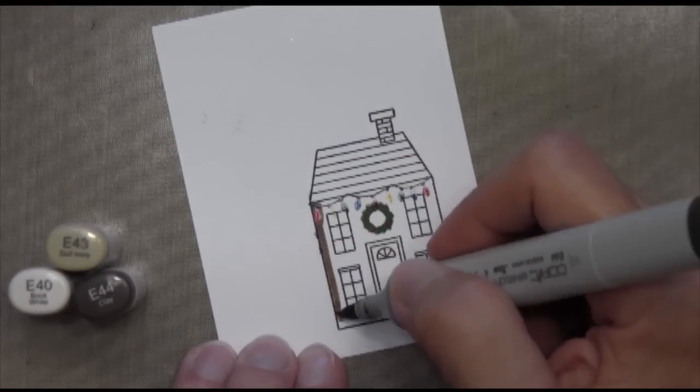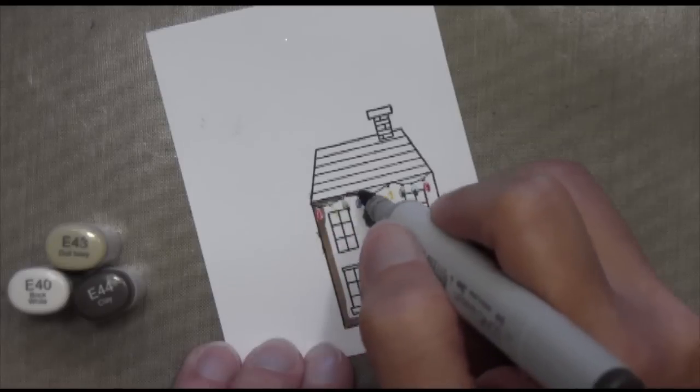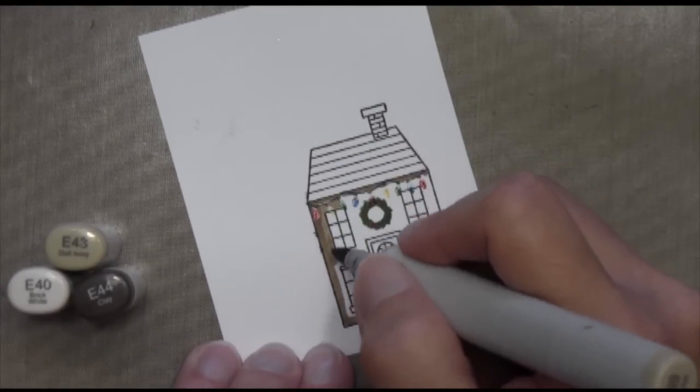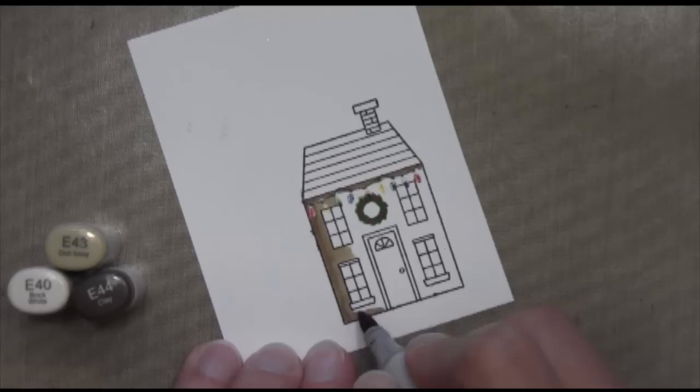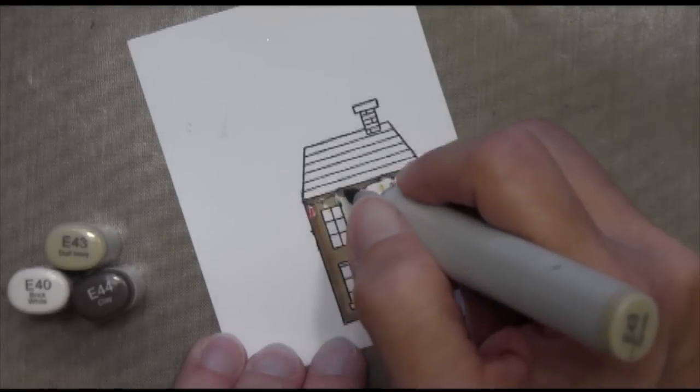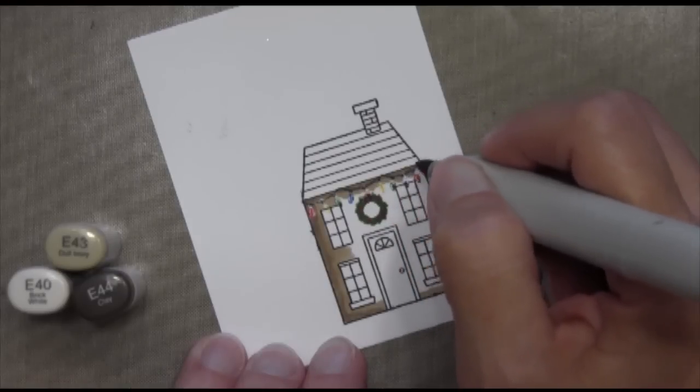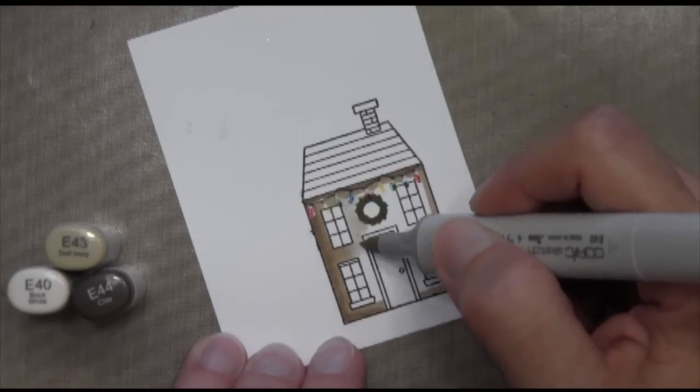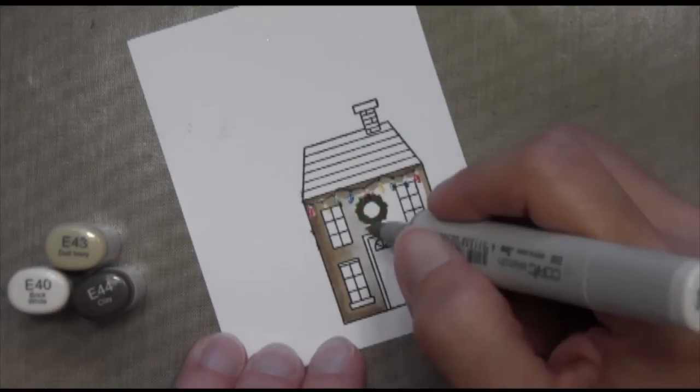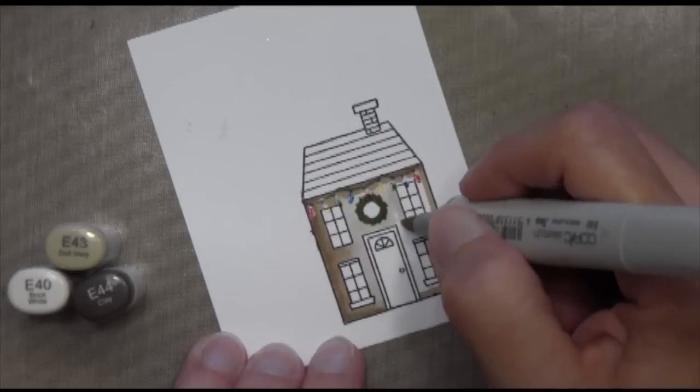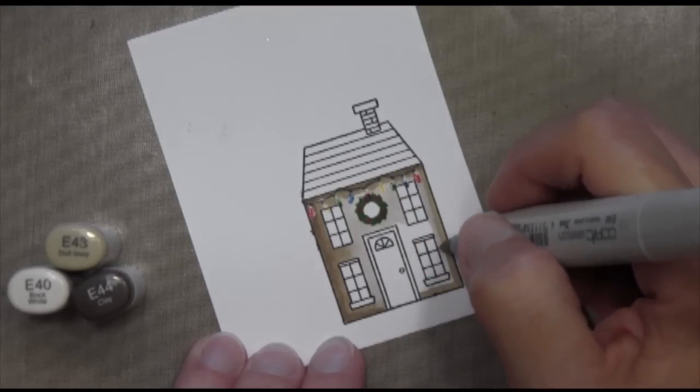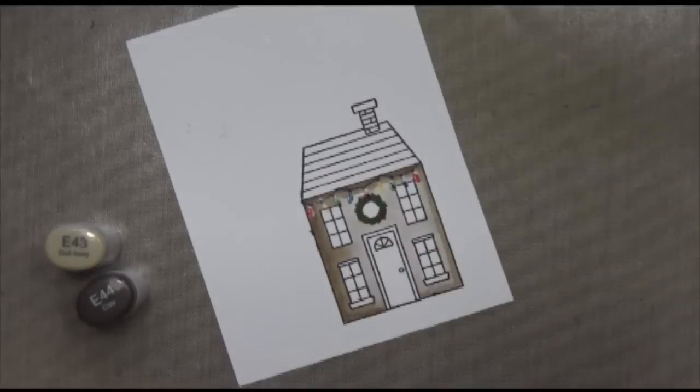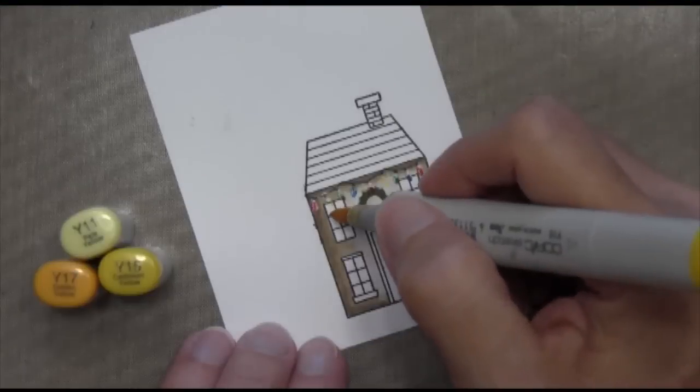Now I'm going to color this with Copics. I've got E40, 43, and 44. As usual, I start off in these small areas with the darkest color first. So I colored that E44 on the left-hand side and on the top because you'll have a little shadow from the roof line. Now I'm blending that inward with E43. I always use my medium color on the right-hand side edge, not the darkest but the medium. Now I have E40 and I'm just going to blend that all the way to the center.